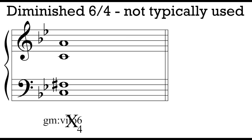One final note before we go: diminished triads in 6-4 position. If a perfect 4th with the bass is problematic, try an augmented 4th with the bass — that's what we get when we have a diminished chord in 6-4 position. Just like we didn't like diminished triads in root position, diminished triads in 6-4 position are not typically used. So the 7-diminished 6-4 in major and minor, and the 2-diminished 6-4 in minor — these are chords we won't see much in music and won't use in part writing. That means those diminished triads really only have one option: first inversion, which is how we see and use them most typically.